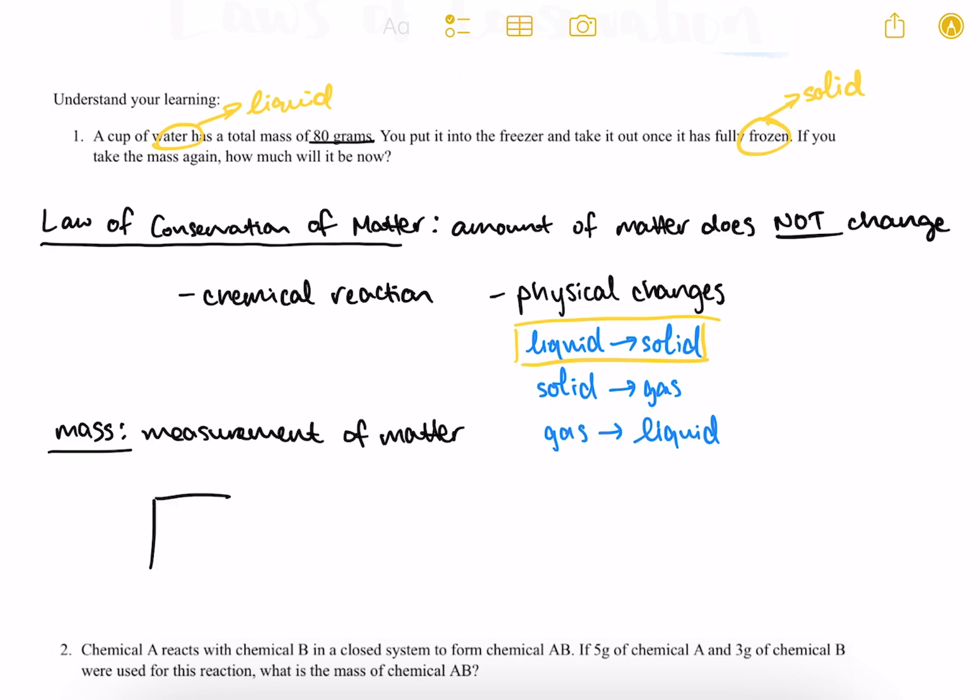So since we have this cup of water with a certain amount of water inside of it that has a certain mass, which we know is 80 grams, even after it is frozen, since this water hasn't gone anywhere, it's just gone from a liquid to a solid, it still retains the exact same mass of 80 grams.